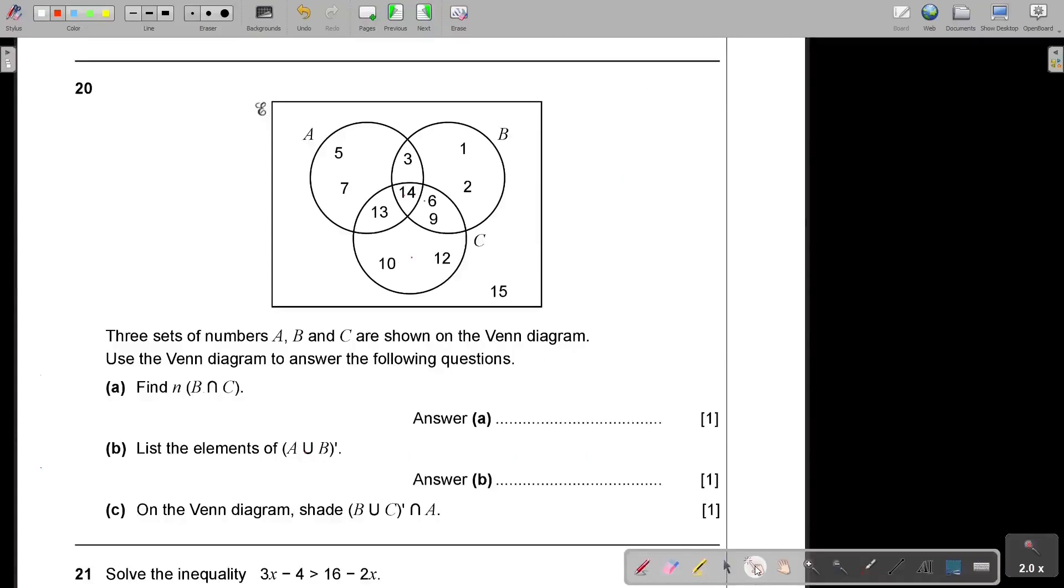Let's start with question number 20. Three sets of numbers A, B, and C are shown on the Venn diagram. Use the Venn diagram to answer the following questions. Find N, B intersection C. You will find this in the textbook on page 65. N means how many. Count the elements.